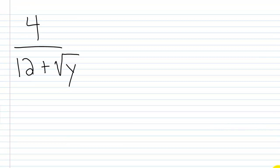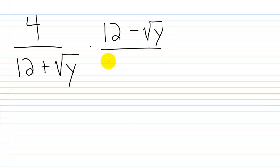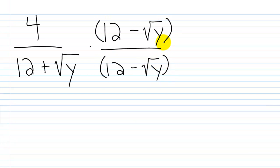What about 4 over 12 plus the square root of y? To rationalize the denominator, I need to multiply the numerator and denominator by the conjugate, which would be 12 minus the square root of y. The first and first are the same — 12 and 12. The second and second are the same — square root of y and square root of y. You're just changing the sign, from plus to minus.